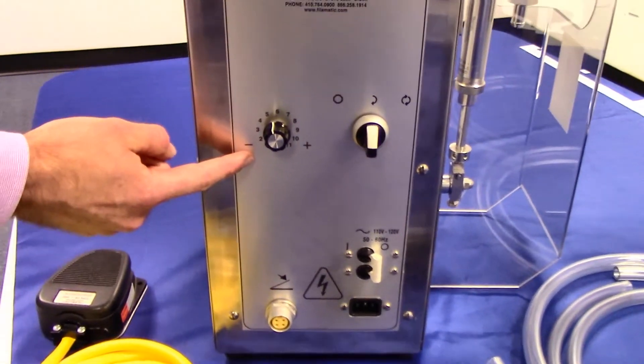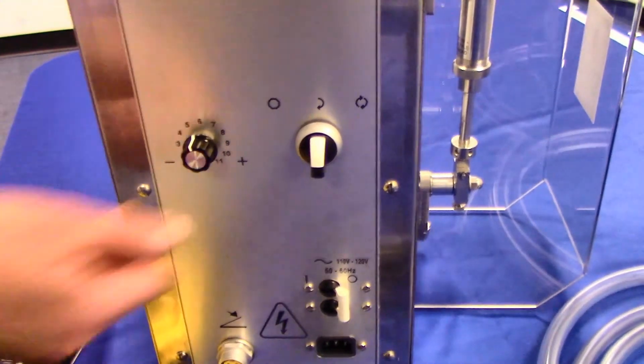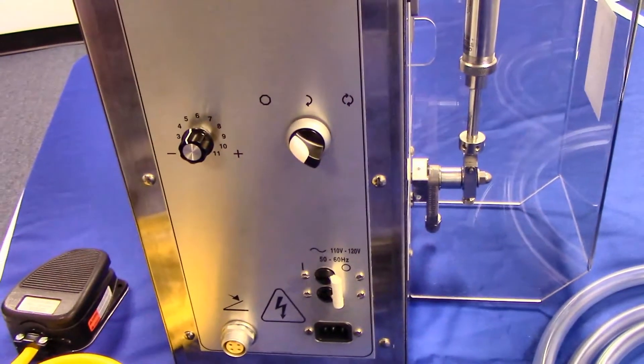Here's your speed dial. This is your selector switch, which has three settings. To the left is the off setting.